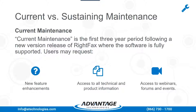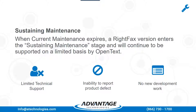Current maintenance is the first three-year period following a new version release of RightFax where the software is fully supported. During current maintenance, customers can request feature enhancements and bug fixes, and have access to webinars, forums, and events, as well as all technical and product information including the OpenText Knowledge Center. When current maintenance expires, a RightFax version enters the sustaining maintenance stage and will continue to be supported on a limited basis. There will be no development work to fix product defects or feature enhancements.